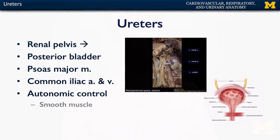Let's talk about ureters. Ureters begin at the renal pelvis of the kidney, and they descend down the abdominal cavity, snug against the psoas major muscle.